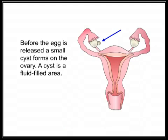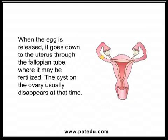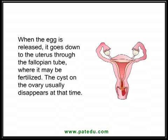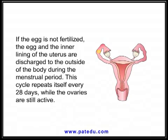Before the egg is released, a small cyst forms on the ovary. A cyst is a fluid-filled area. When the egg is released, it goes down to the uterus through the fallopian tube, where it may be fertilized, and the cyst on the ovary usually disappears at that time. If the egg is not fertilized, the egg and the inner lining of the uterus are discharged to the outside of the body during the menstrual period. This cycle repeats itself every 28 days while the ovaries are still active.